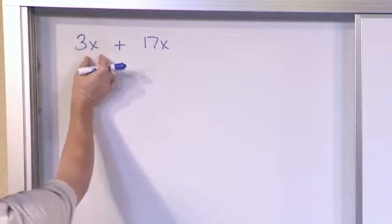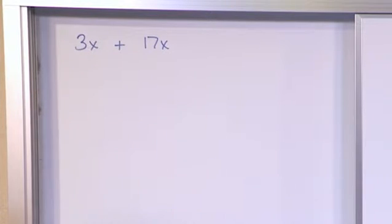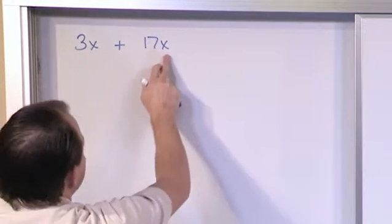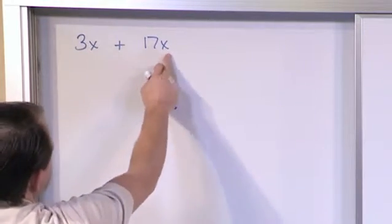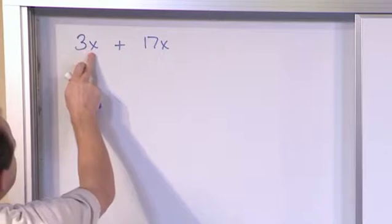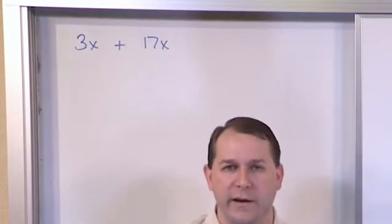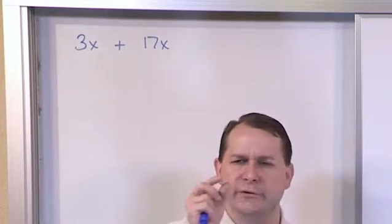Obviously, you have 3 times some unknown thing called x. We don't know what x actually represents. It could be any number in the world. Plus 17 times x. And again, x is some unknown number. But whatever number x actually is, it's the same thing here as it is here. Because anytime you see x in an equation, everywhere you see it, you don't know what x is, but everywhere you see it, it's the same number.